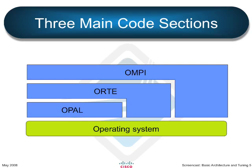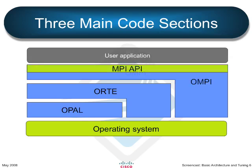If you throw in the whole diagram we had before, the MPI API makes up the top bit of the OpenMPI layer, and then the user's application is layered on top of that.